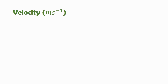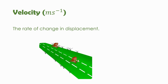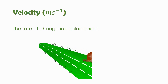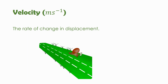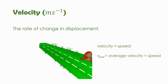The next term is velocity, which means the rate of change in displacement. In the animation, snails move — some faster, some slower — showing that when an object changes its position by following a single path, the rate of change in position is velocity. Remember, the magnitude of velocity will always be smaller than the magnitude of speed. When we take average velocity, it becomes equal to the speed of a body. The SI unit for velocity is also meter per second.